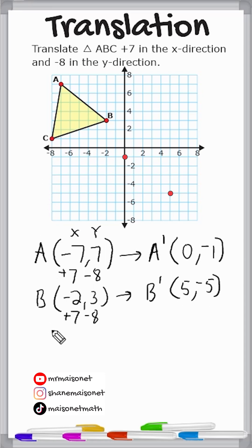Currently C is located at negative 8, positive 1, so let us go ahead and record those coordinates. And to figure out where C is going to end up, what we do is we add 7 to the x-value and we subtract 8 from the y-value. Negative 8 and positive 7 results in negative 1. Positive 1 and negative 8 results in negative 7.